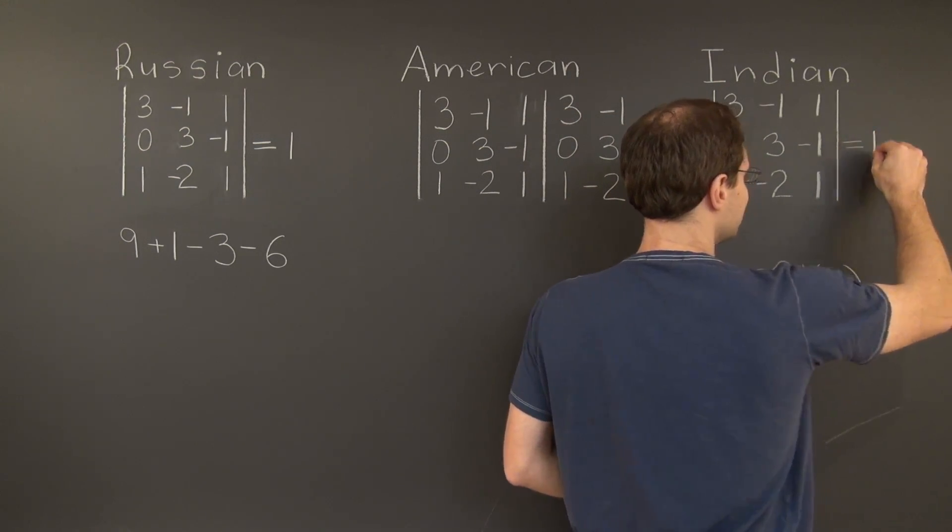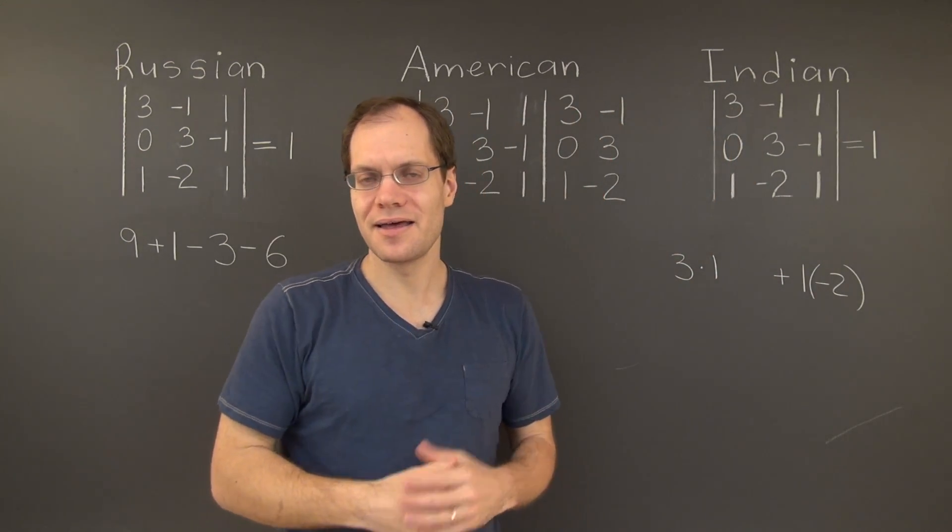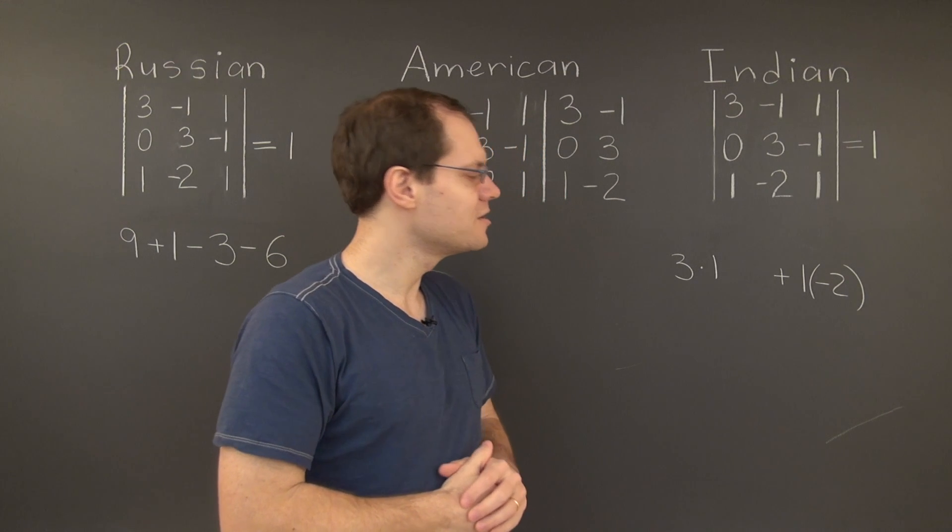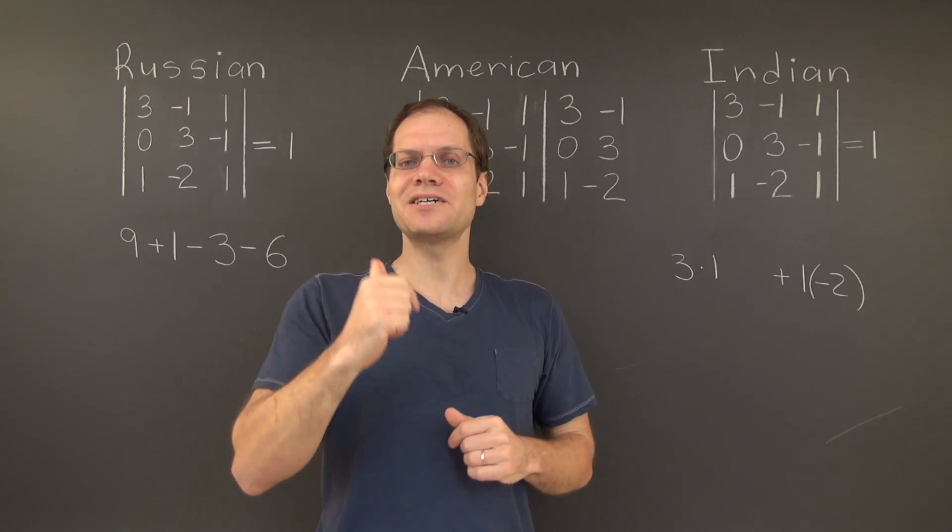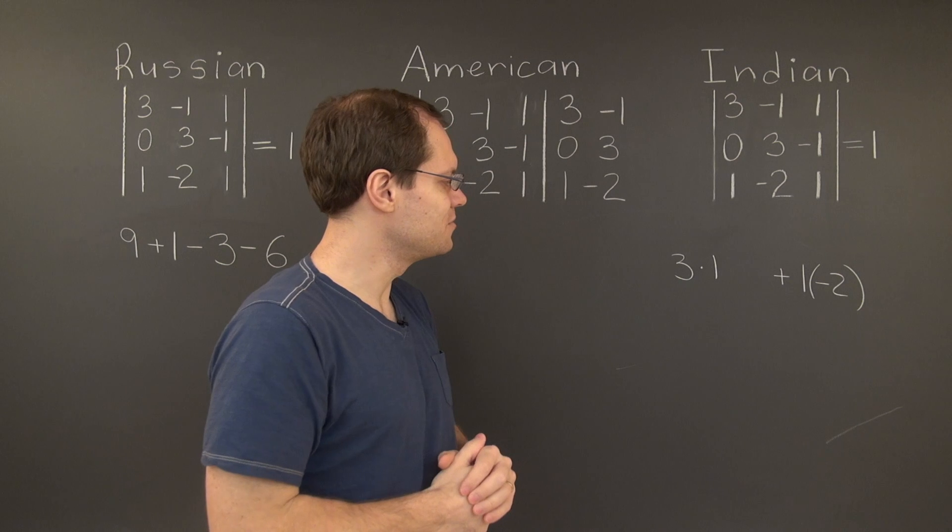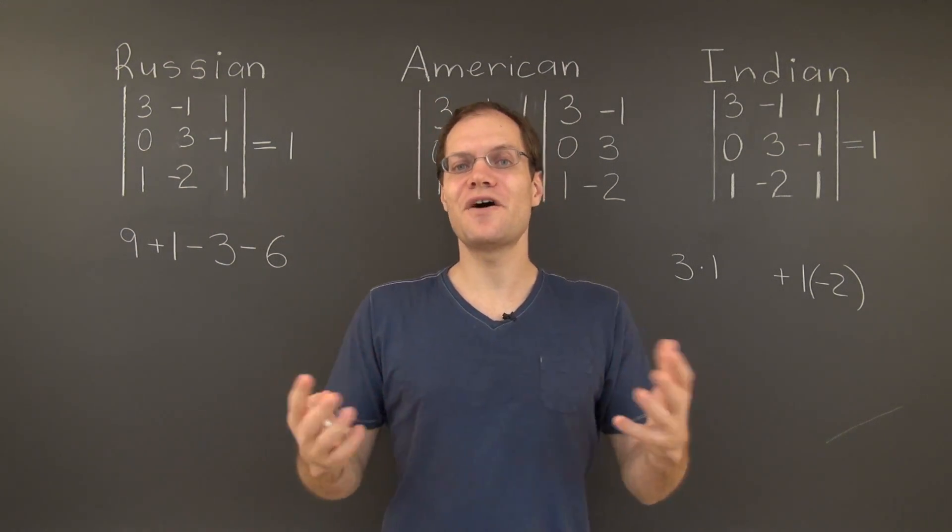So this was by far the quickest, the simplest, and the most reliable way to calculate a 3x3 determinant. Especially when there's a 0 in the mix. So as far as I'm concerned, the Indian approach wins.